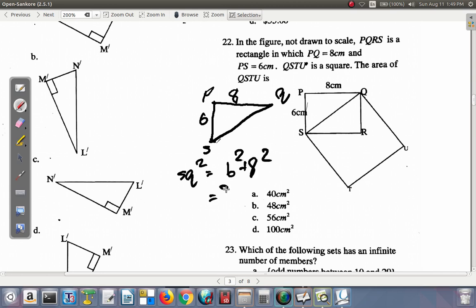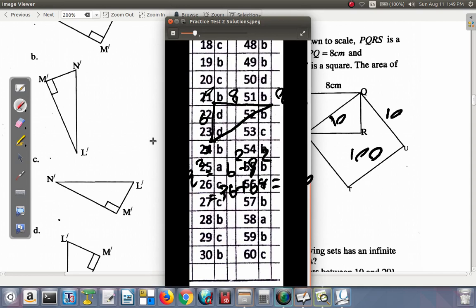According to Pythagoras theorem, SQ squared is 6 squared plus 8 squared. In that case, 36 plus 64, and this becomes 100. Then the square root of 100 is SQ, which is 10. Since it's a square, this is 10 by 10, which equals 100. So QSTU is D.